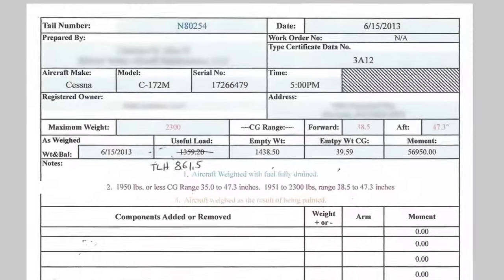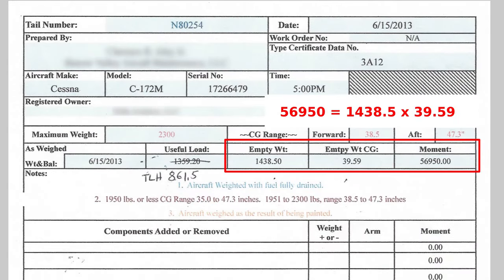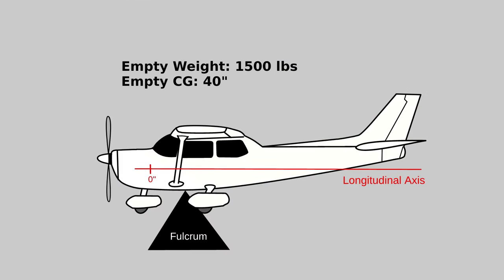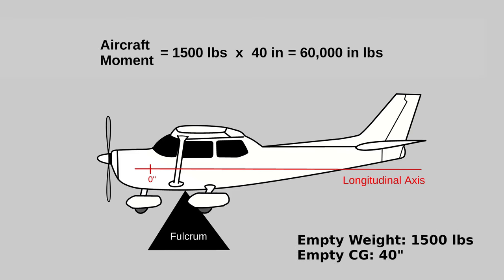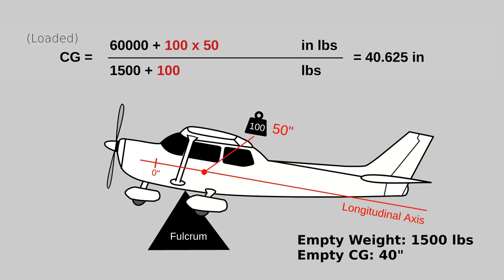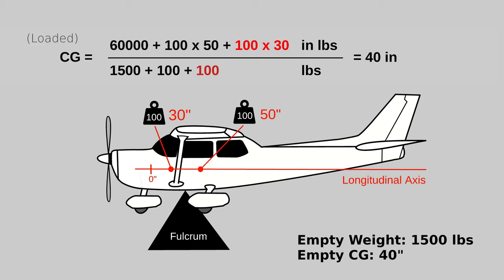This information can be found in the weight and balance document that's required to be kept in each aircraft. Consider a simple example where the aircraft weighs 1,500 pounds and the CG is exactly 40 inches — this means the aircraft has a moment of 60,000 inch-pounds. If a 100-pound weight were loaded at a station with an arm of 50 inches, the new CG would be 40.6. If we added another 100-pound weight at the 30-inch station, that would move the CG back to 40.